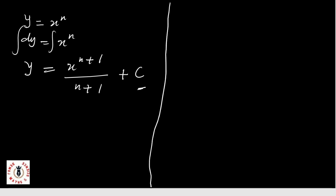To further illustrate: if y equals x raised to power n, remember that dy/dx equals anx raised to power n minus one. Let's take an example to see this clearly.